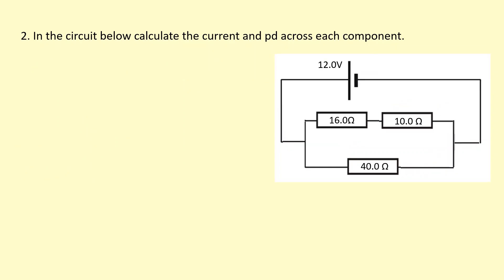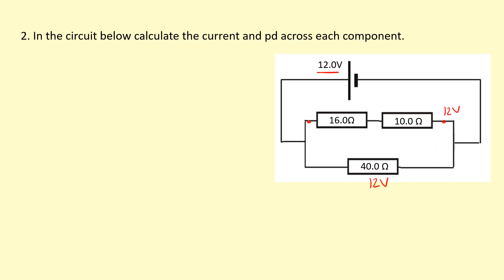It's just the same resistors but organized in a different way. I notice that the 12 volt cell is in parallel with the 40 ohm resistor, so the voltage across that will be 12 volts. It's also in parallel with this series combination, so the voltage across those two points will also be 12 volts. The resistance between those two points is just the two series resistors added up — 26 ohms in total. So I can work out the current through this branch: 12 volts over 40 ohms gives me 0.30 amps through this branch.